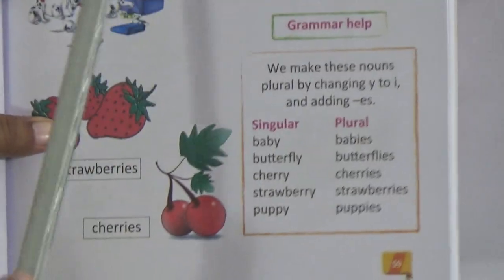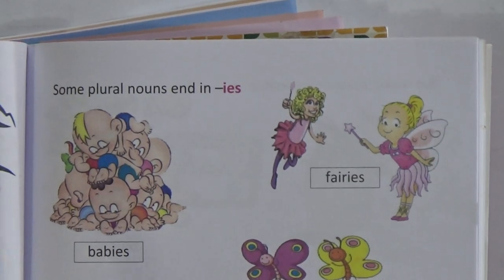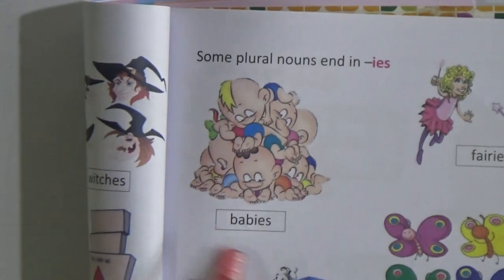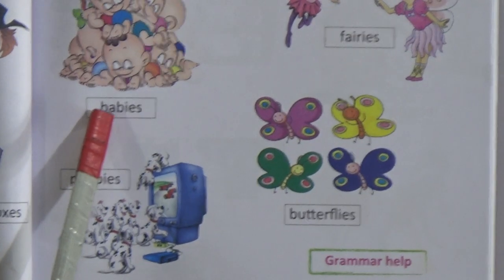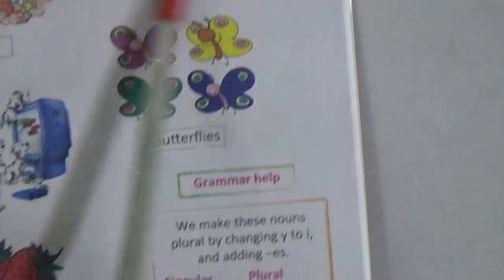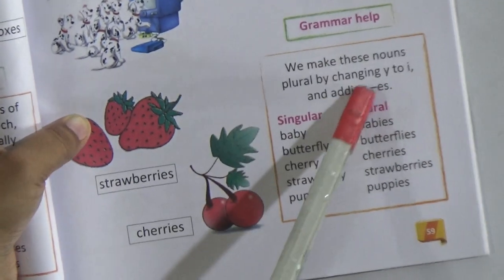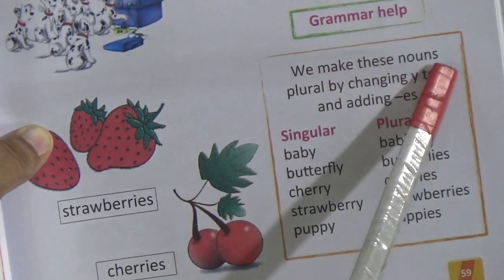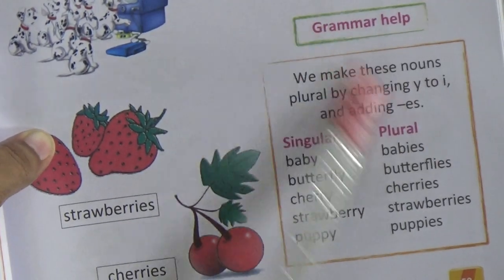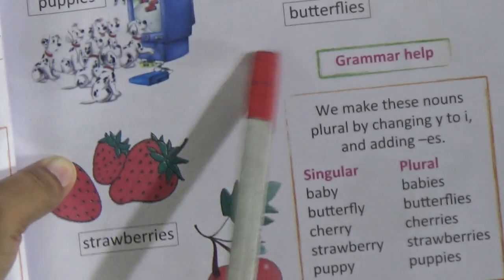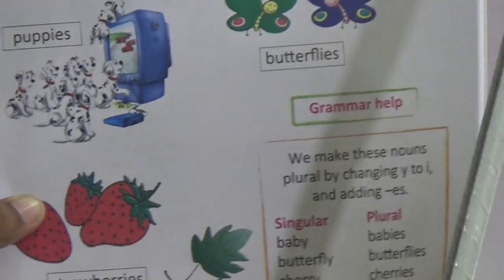And sometimes we use IES for making the singular word plural. Babies — just look here, B-A-B-Y is the singular number and when we write the plural we write B-A-B-I-E-S. Fairies, puppies, butterflies, strawberries, cherries. When we have to add IES, we make the noun plural by changing Y. If the last letter of any word is Y, then it will be changed into IES and then becomes plural.